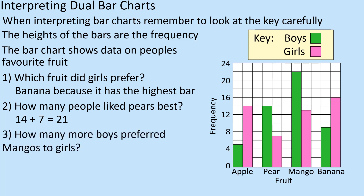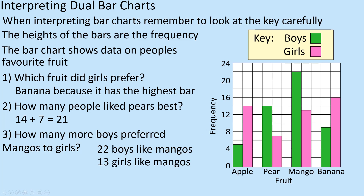How many more boys preferred mangoes to girls? These are the mango columns. We have 22 boys and 13 girls who like mangoes. So 22 minus 13 gives 9 more boys who prefer mangoes.